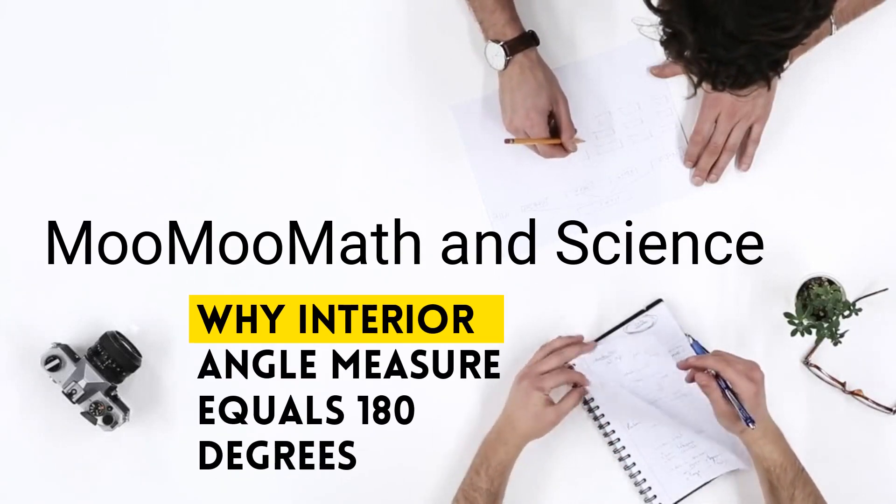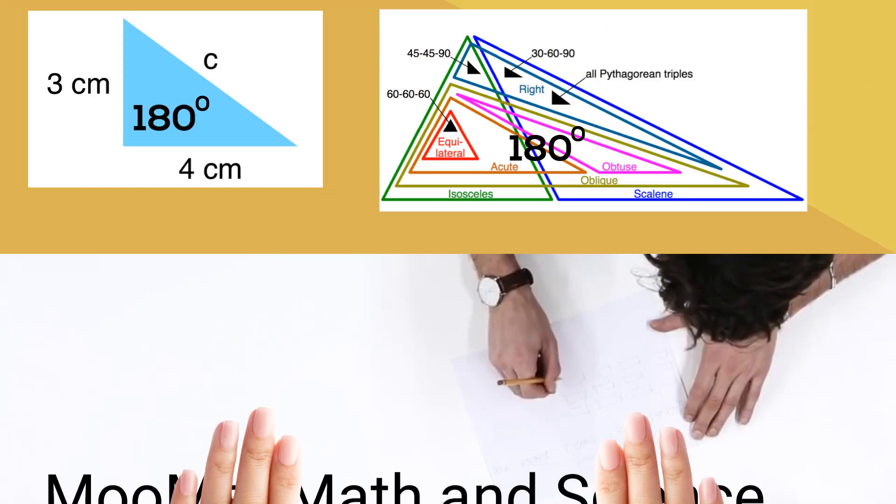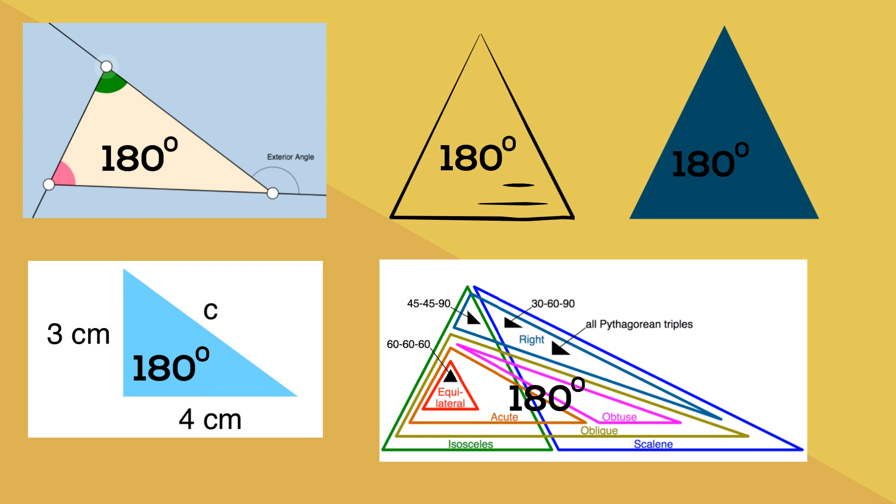Welcome to Moo Moo Math and Science. In this video, I'd like to show why the interior angle measures of a triangle equal 180 degrees.